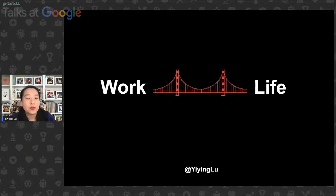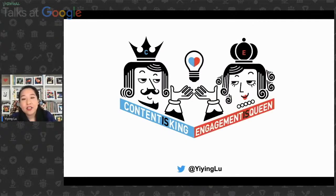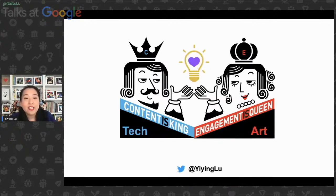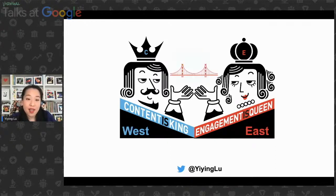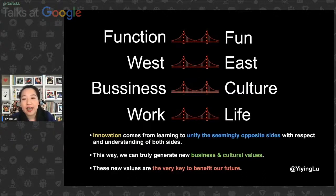This is the bridge between work and life. We've covered a lot of content — content is king, popularized by Bill Gates in 1996. I'd like to propose: content is king and engagement is queen. When we put function and fun together, business and culture together, tech and art together, this is how we create something that makes people's hearts sing. When we bridge the gap between East and West together, we achieve a more holistic way of being. Innovation comes from learning to unify the seemingly opposite sides and respect and understand both sides — this way we can truly generate new business and culture value, which are the very keys to the future.